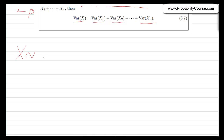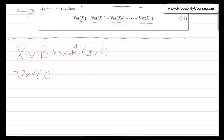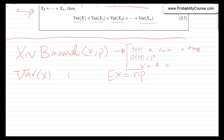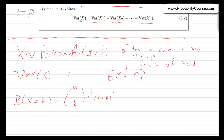Here's an example: let x be a binomial random variable with parameters n and p. We want to find its variance. Recall x describes the number of heads in n coin tosses, where probability of heads is p each time. The PMF is P(x = k) = C(n,k) · p^k · (1−p)^(n−k). We could use the direct definition, but there's a much easier way.